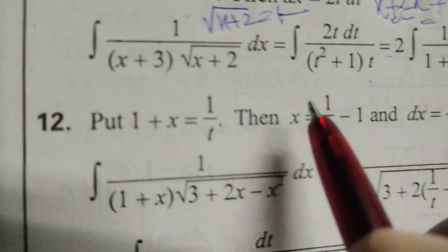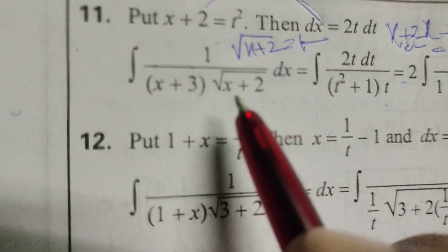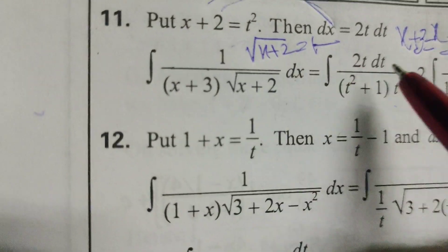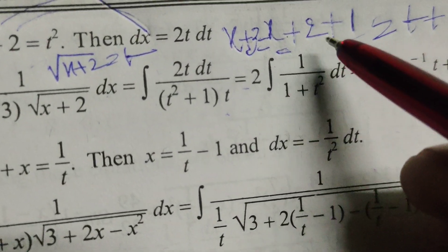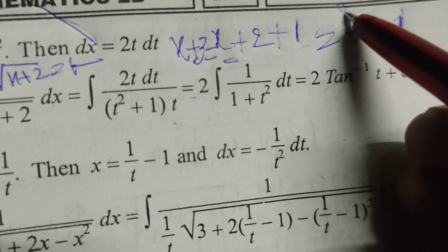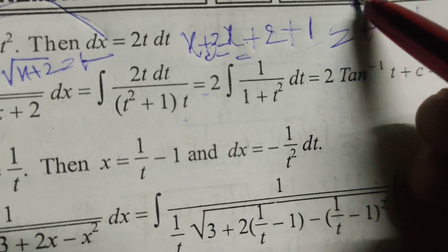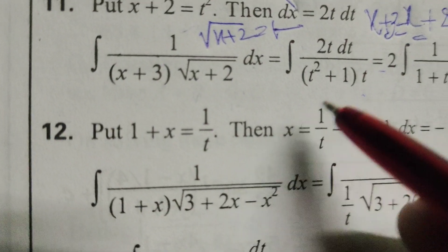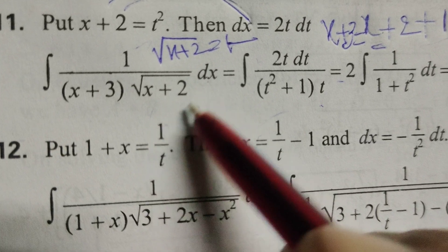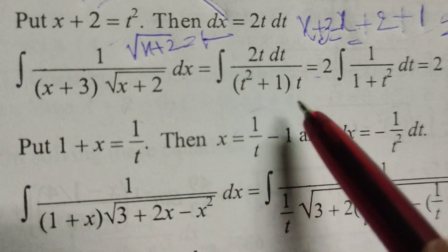Okay, now here x plus 2. What is x plus 2 here? t square. So t square plus 1. Into root of x plus 2 means t.